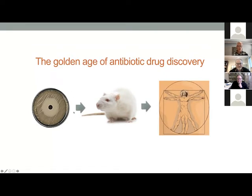There are really a wide variety of tools available, and I will talk about just two collections and our work with them during this lecture. These collections are not new — both were invented about 15 years ago. The KO collection out of the Nara Institute in Japan — Hiratata Mori and Barry Wan collaborating on this — is an ordered collection in which every gene that can be deleted in E. coli is deleted.